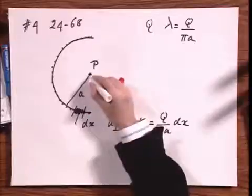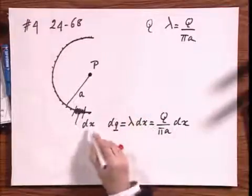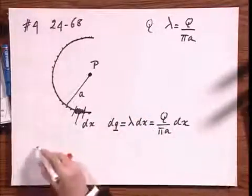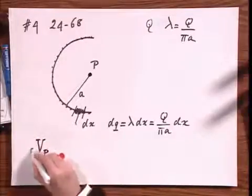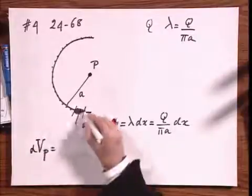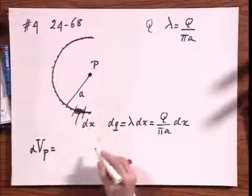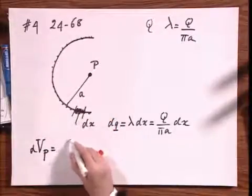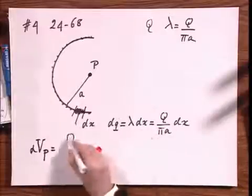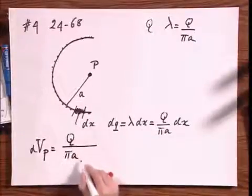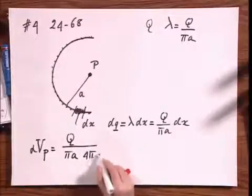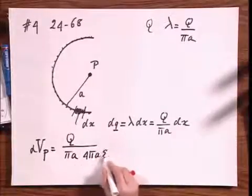The potential at point P as a result of this charge, if I assume that infinity is zero, so that potential, which I will call DVP, it's only a teeny weeny little bit due to this section DX, therefore equals Q divided by pi A divided by 4 pi A epsilon zero.